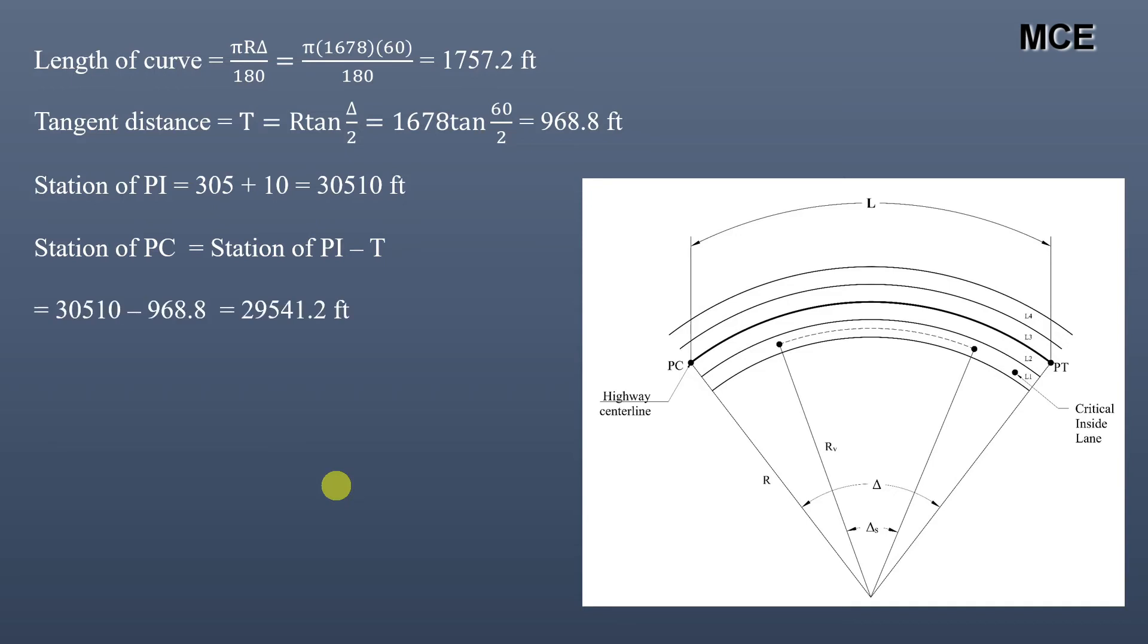Station of PC = 30,510 - 968.8 = 29,541.2 feet, or in station format: 295+41.2.